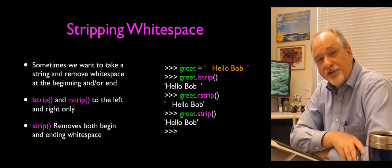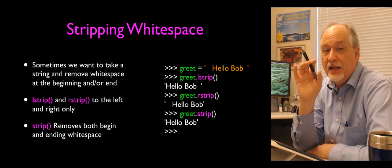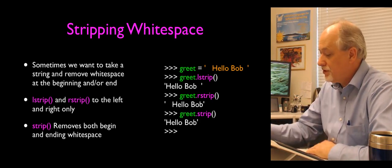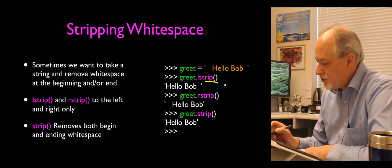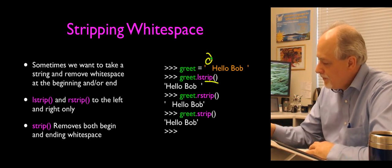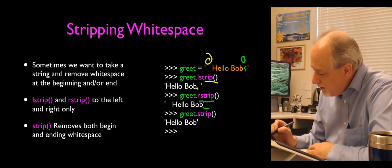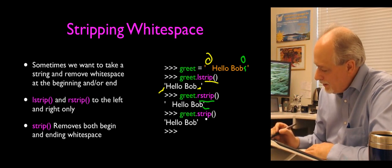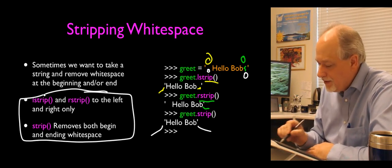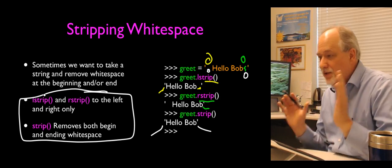Another common thing we need to do is throw away white space. Sometimes a string has blank characters or non-printable characters at the beginning and end, and we can strip them. There are three built-in string functions for this: lstrip, which strips from the left; rstrip, which strips from the right; and strip, which gets rid of all white space on both the left and right sides. We'll be using these a lot — one of the things you do in Python is cleaning up data by stripping spaces from the beginning or end.